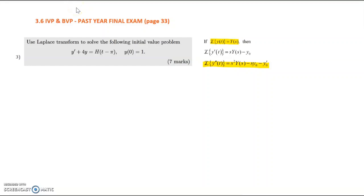Look at your past year final exam problem number 3 on page 33 in your lecture notes. Use Laplace transform to solve the IVP: y' plus 4y equals H(t minus π), given y(0) equals 1.